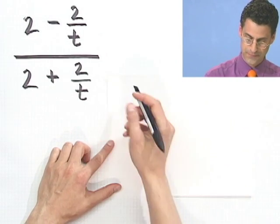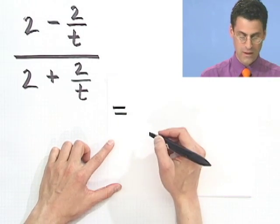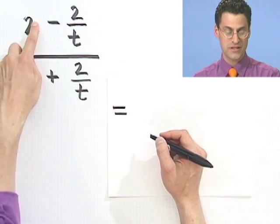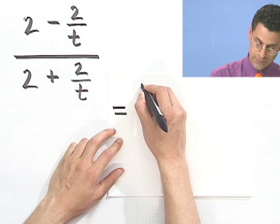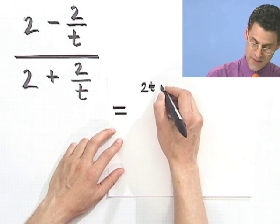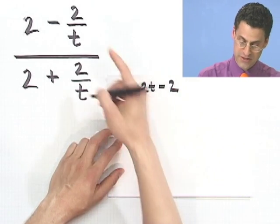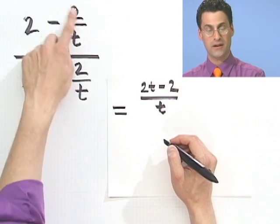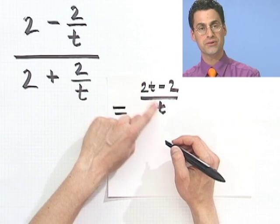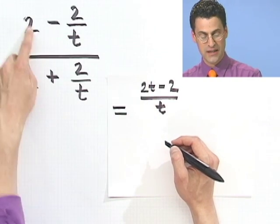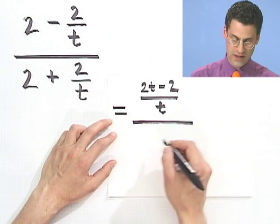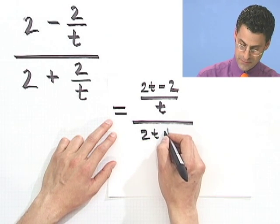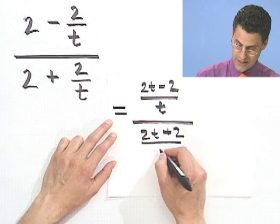If you were to work that out, getting a common denominator here means multiplying top and bottom by t. So this would be 2t over t — I'd see 2t and then I have the minus 2, all over t. That's just the top there with a common denominator. You see how that's just 2? Because if I canceled, that's just 2. All divided by — do the same thing here — I would see 2t plus 2, all over t.